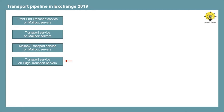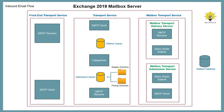Now let's understand how email flow works in Exchange Server organization and how each component plays an important role. When an email is sent from the internet to an Exchange Server organization, the email is accepted by the receive connector on the Front-end Transport Service. Then this email is handed over to the SMTP Receive component of the Transport Service, where checks are performed — for example, transport rules, anti-spam, and anti-malware checks. If the email passes these checks, it is submitted to the submission queue.